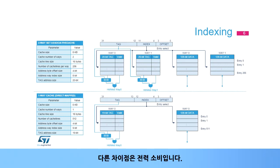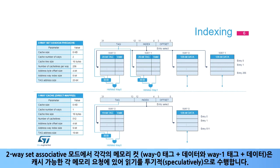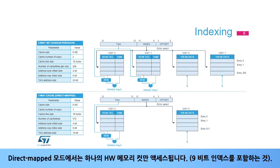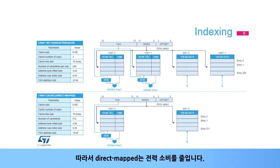The other difference is power consumption. In two-way set-associative mode, both cuts of memories — way 0 tags plus data and way 1 tags plus data — are read speculatively at each cacheable memory request. In direct mapped mode, only one hardware memory cut is accessed, the one containing the 9-bit index. So direct mapped reduces power consumption.